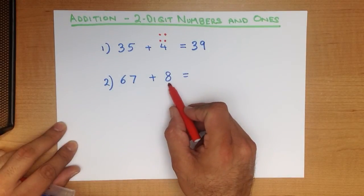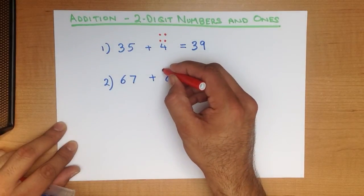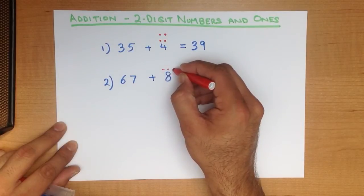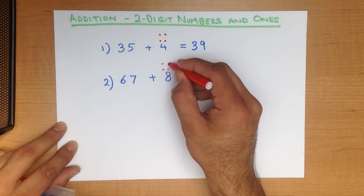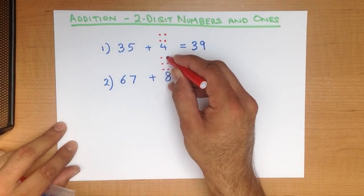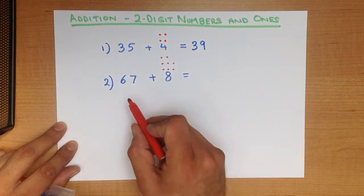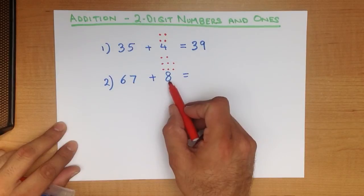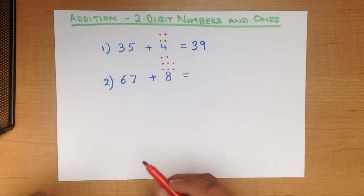The smaller number is 8. 1, 2, 3, 4, 5, 6, 7, 8. 67 plus 8. 8 has 8 dots above it.